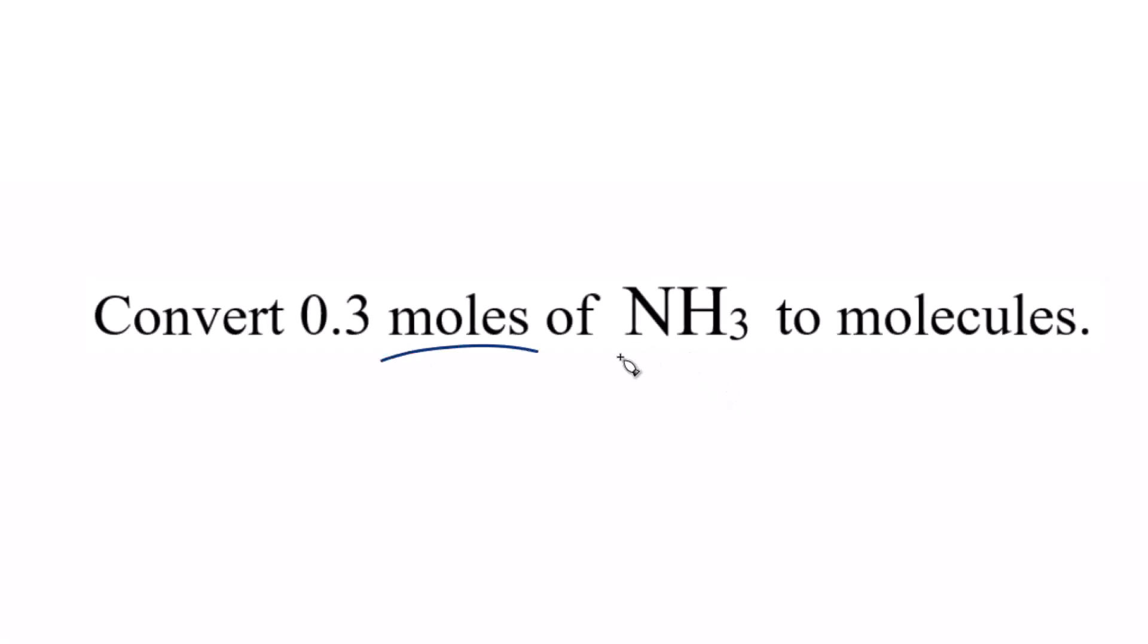Let's convert moles of NH3 to molecules. We're talking about moles of ammonia to molecules. We have 0.3 moles of NH3. This is just a number I made up for the problem.